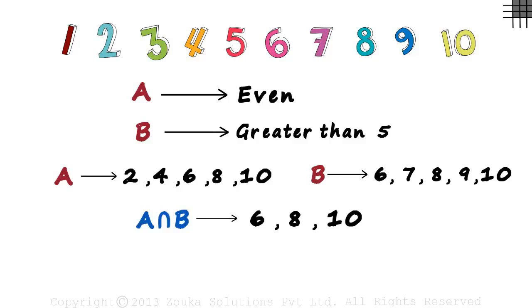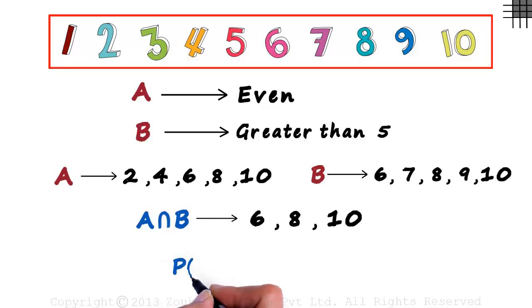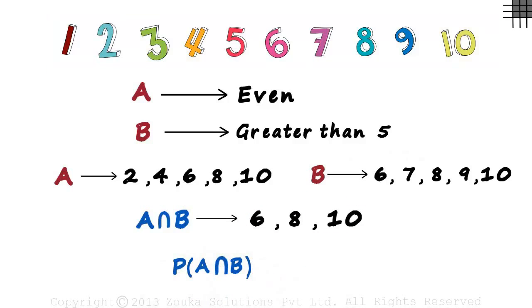You can see that each of them are greater than five and are even too. So what will be the probability of events A and B happening together? Three numbers out of a possible ten. So the probability of both events A and B happening together will be three by ten. This also equals zero point three or thirty percent. In layman terms, we can say that there is a thirty percent chance of picking up a number that is even and greater than five.